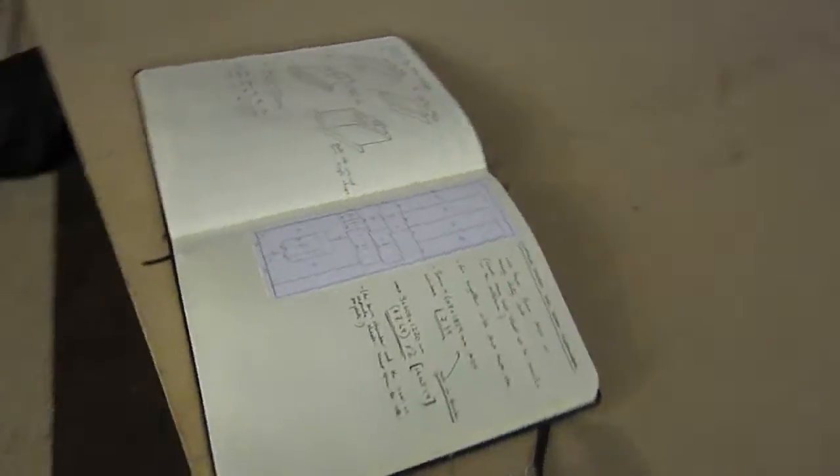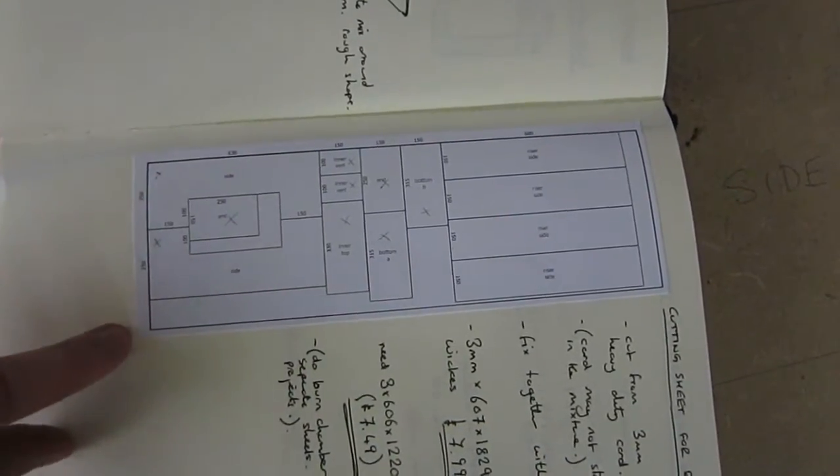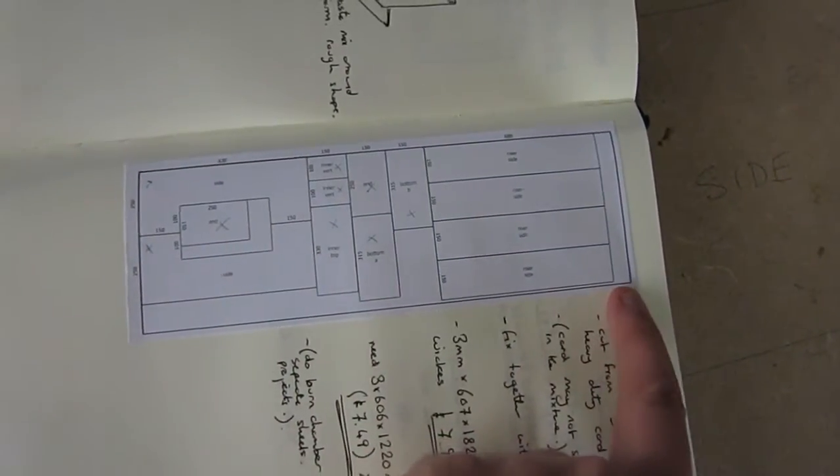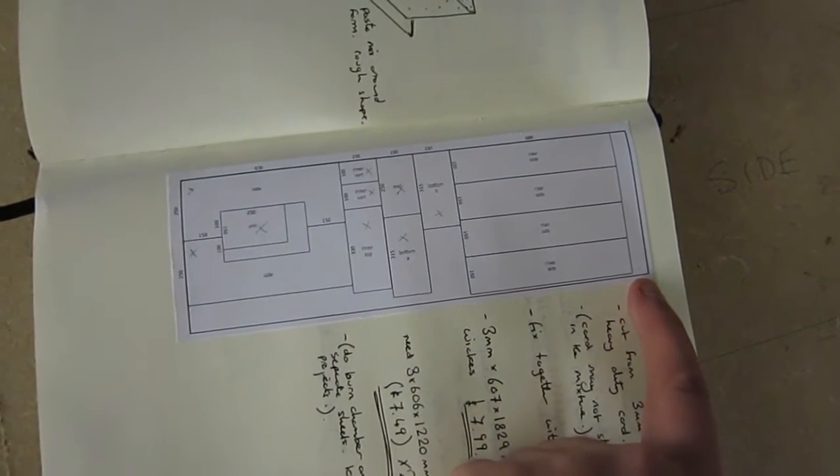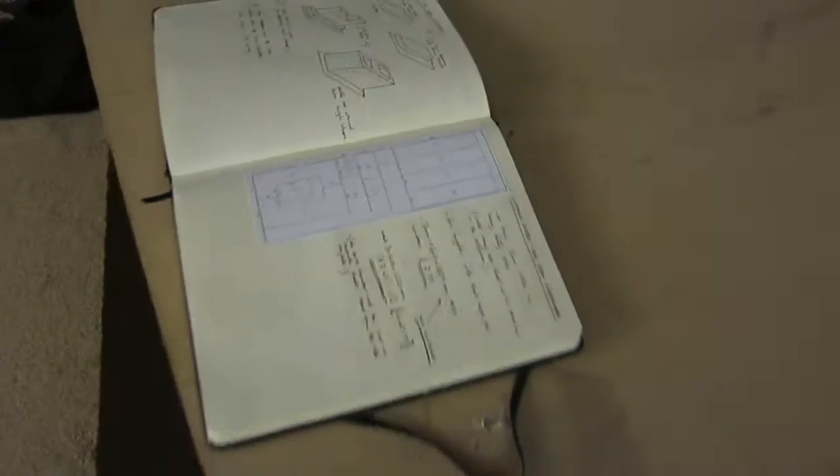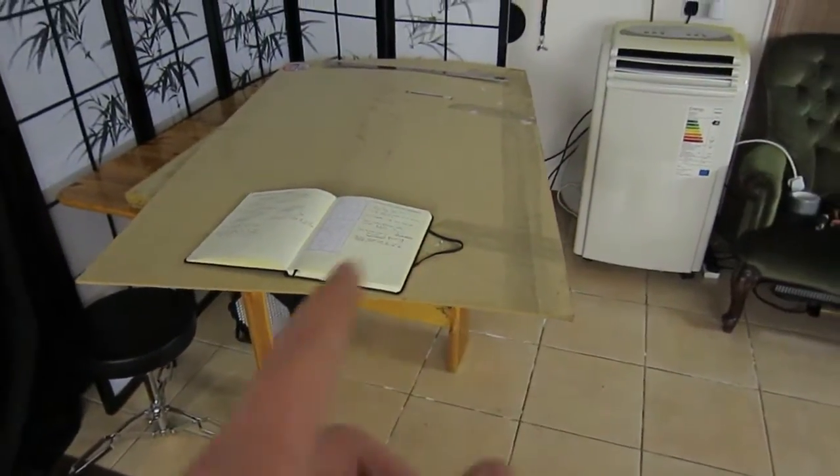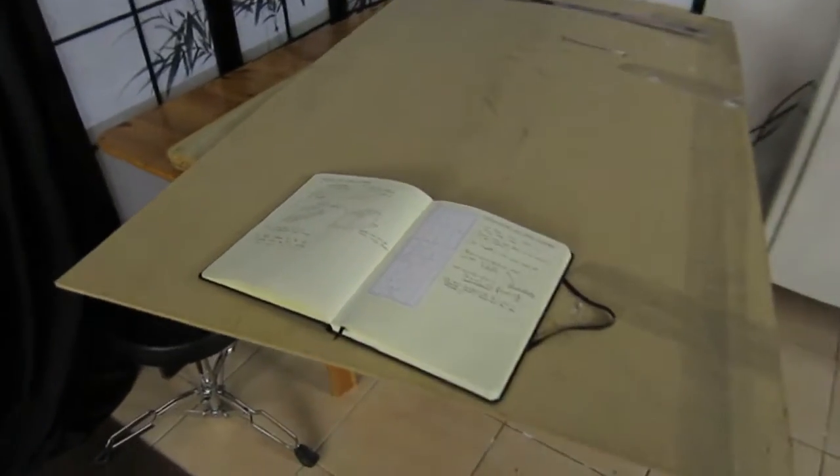So what I've got here is my cutting layout, and this was based on a 650 by 1800 and something millimeter piece of 3mm MDF. Didn't get a chance to go to the store today, but we did have this 6mm MDF, which is obviously a different size, just hanging around.